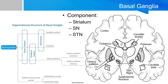When we say basal ganglia, we typically think of structures such as the caudate, the putamen, and the globus pallidus. But because of their functional similarities, there are additional functional nuclei such as the subthalamic nuclei and the substantia nigra that are also included in the basal ganglia unit.